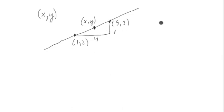So the slope is 1 fourth between those two points, which should be the exact same as the slope between x, y and 1, 2. So how do we compute the slope between x, y and 1, 2?